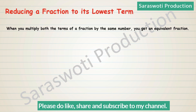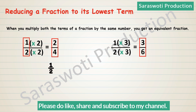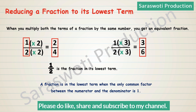Reducing a fraction to its lowest term. When you multiply both terms of a fraction by the same number, you get an equivalent fraction. For example, 1/2: 1×2 over 2×2 equals 2/4, and 1×3 over 2×3 equals 3/6. Here, 1/2, 2/4, and 3/6 are all equivalent fractions, but 1/2 is the fraction in its lowest term. A fraction is in its lowest term when the only common factor between the numerator and the denominator is 1.